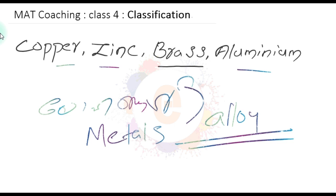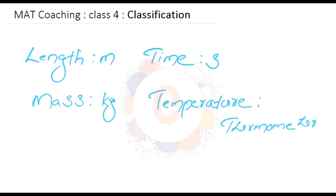The answer for the next question: length M, time second, mass KG, temperature thermometer. The first one: length — M is meter. Second: time is second. Third: mass is KG (kilogram). Fourth: temperature — thermometer. In all other pairs, the second word is the symbol of unit. But the last one, thermometer, is an instrument. So thermometer is the odd one out.